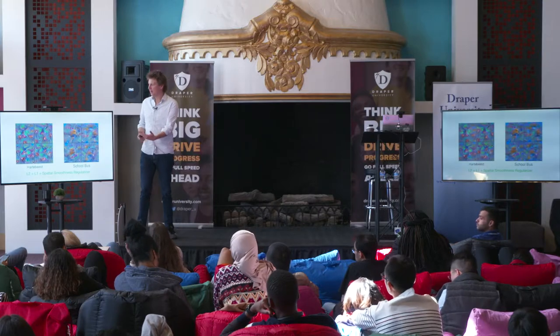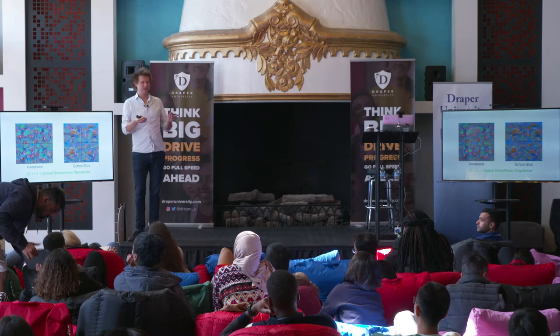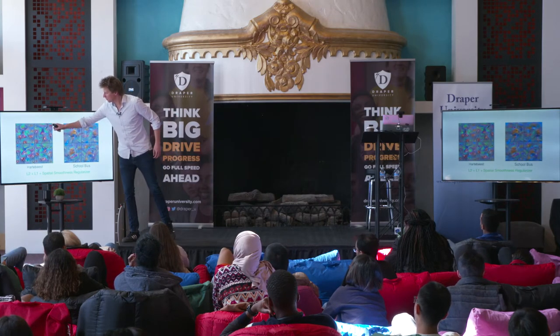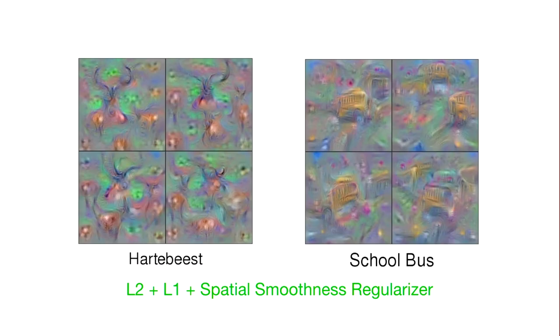Here, so now rather than those pixels, we can kind of see—ah, the network thinks when we say hartebeest, what the network thinks is a couple features actually. So first you can see these curvy horns. So somehow hartebeests actually are animals with curvy horns. The network thinks the horns are important—it makes sense because the curvy horns are kind of a unique feature of hartebeest.